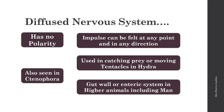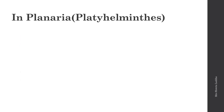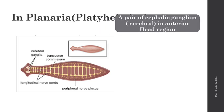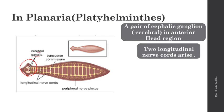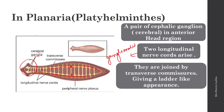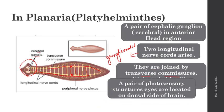In Planaria, a platyhelminth, they have a pair of cephalic ganglia — also called cerebral ganglia — in the anterior head region. Two longitudinal nerve cords arise from there, and these nerve cords are ganglionated. The ganglia are joined by transverse commissures, which give the nervous system a ladder-like appearance. Therefore this nervous system is called a ladder-like nervous system.